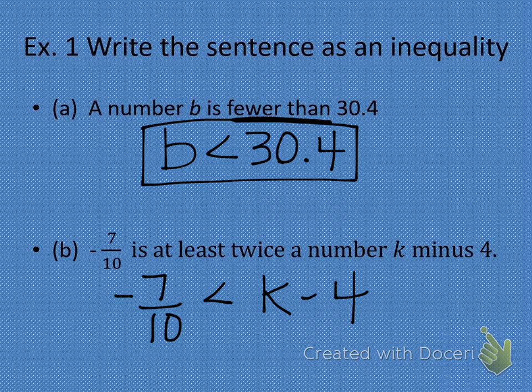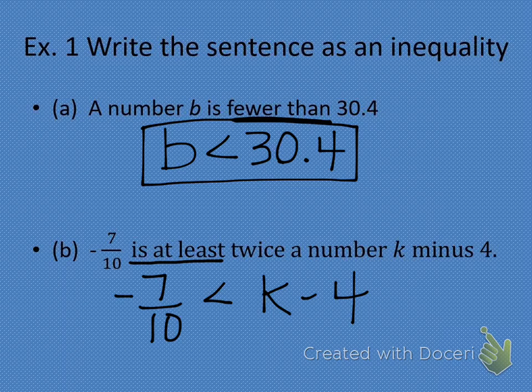Let's break this sentence down. Negative 7 tenths — so we're good so far. Is at least. Let's talk about 'at least.' If you go to the store with at least $5, could you have more than $5? Yes. So would our symbol be less than or greater than if we say 'at least'? Greater than. So we change this to greater than. And if you go to the store with at least $5, could you have exactly $5? Yes. So it's greater than or equal to.